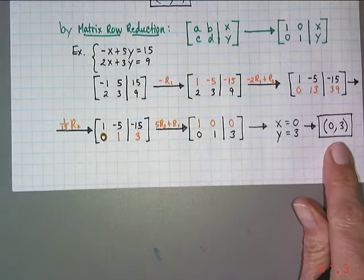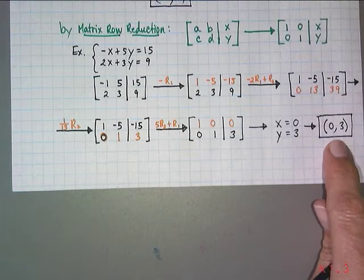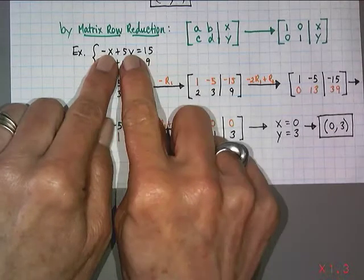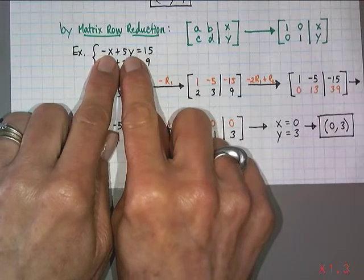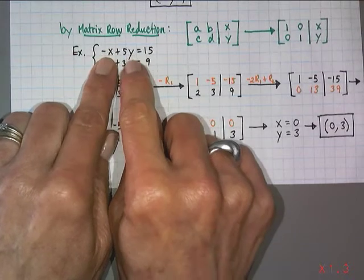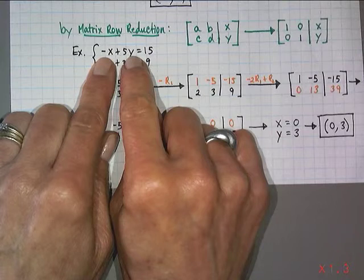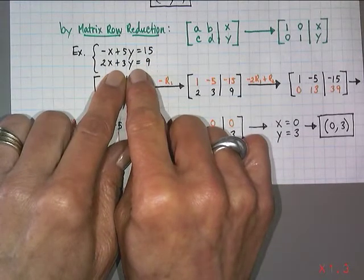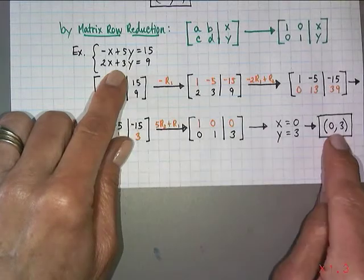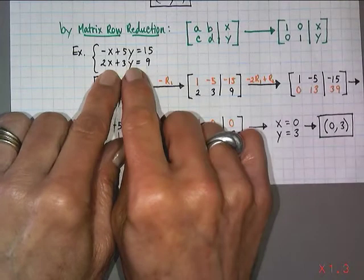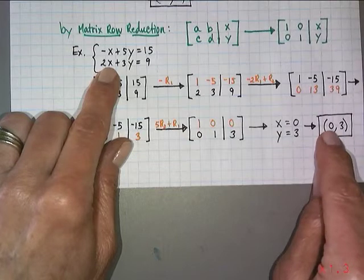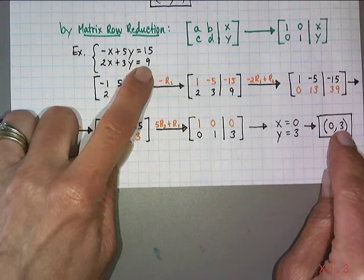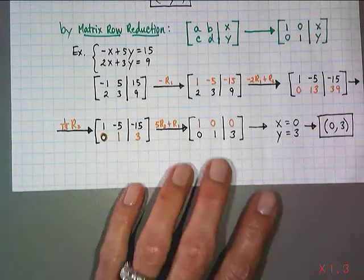Now what you should do to check your work is test your solution. I'm going to insert zero for x, three for y, and see if I get fifteen in the top equation. Negative zero, that's zero. Five times three is fifteen. Yes, fifteen equals fifteen. But for it to be a solution for a system it has to be a solution for both equations. So now I'm going to test these values in for this equation. Two times zero is zero. Three times three is nine. Nine equals nine. Therefore it works. Done.